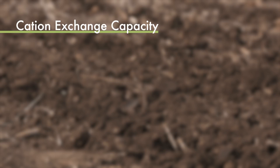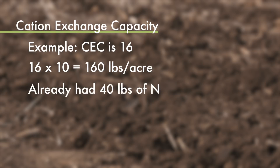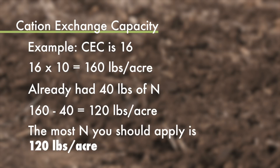Let's say your cation exchange capacity is 16 — 16 times 10 is 160. Let's say you're going for 250 bushel corn and you want to put 250 pounds of nitrogen out there. Can you do it in one shot? Not a chance. No way your soil is going to hold all that. What we would suggest is: look at how much nitrogen is already in your soil and subtract that off your 160 number. Let's say you had 40 already sitting in the soil — subtract that from 160, that leaves 120. The most you should apply is 120 pounds, and even that is probably pushing it a little bit.